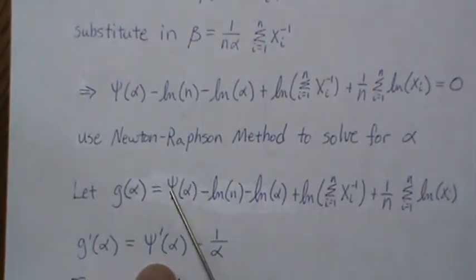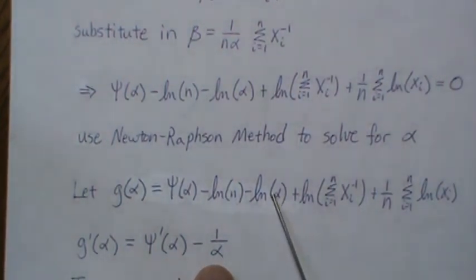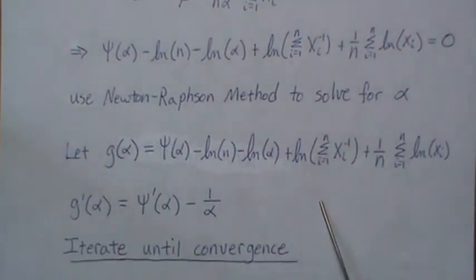And then here, so the derivative of this, we get what's called the trigamma function. That's constant. Here we get minus 1 over alpha. No alphas, no alphas, so they're constant and go away.